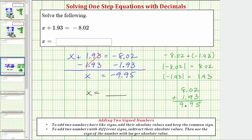So our solution is x equals negative 9.95, but before we go, let's check our solution by substituting negative 9.95 for x in the original equation.